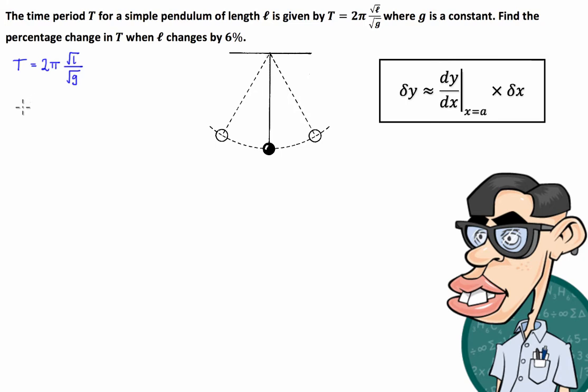And this is equal to 6%, and as a decimal 6% is 0.06. And what are we asked to find? We're asked to find the percentage change in T.